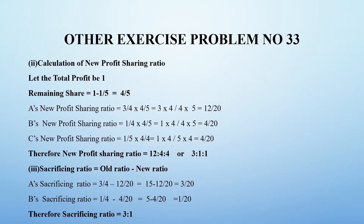So A's new ratio is 12/20. B's new profit sharing ratio: old ratio is 1/4 multiplied by remaining share 4/5. So 1 into 4 is 4 and 4 into 5 is 20, giving 4/20. C's new profit sharing ratio is 1/5; to make the denominator 20, multiply numerator and denominator by 4, giving 4/20.